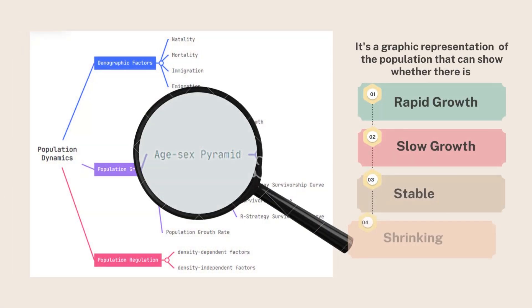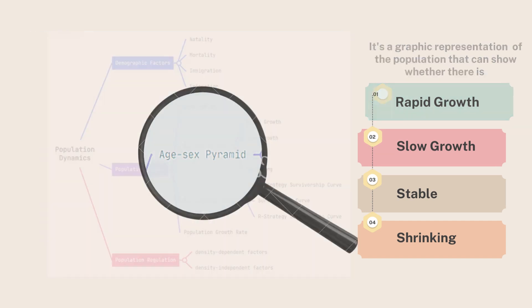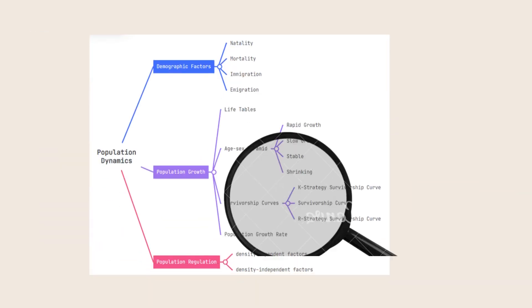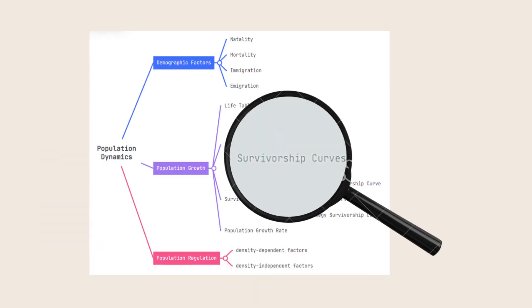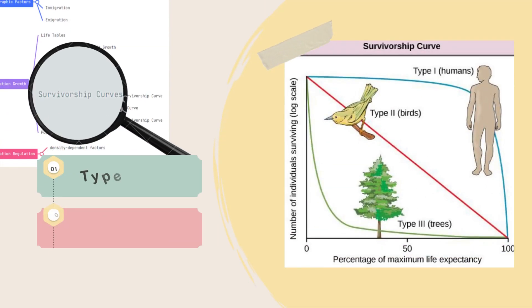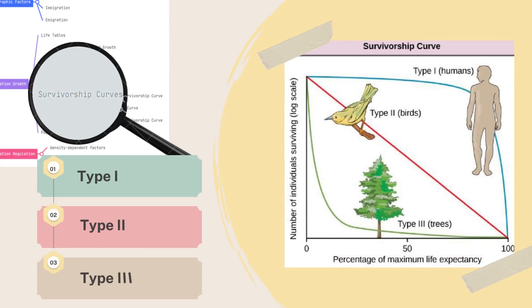For the age-sex pyramid, it is a graphic representation of the population that can show whether there is rapid growth, slow growth, stable, or shrinking of the population. Survivorship curves, on the other hand, is a graphical representation of the elements on the life table and has three known types: type 1, type 2, and type 3.